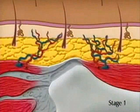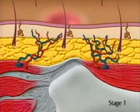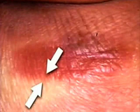A stage 1 pressure ulcer displays non-blanchable erythema of intact skin. To detect this stage, use a gloved finger to apply slight pressure to the reddened area, then release the pressure. The stage 1 ulcer will show a line of demarcation between areas of blanchable erythema and non-blanchable erythema.